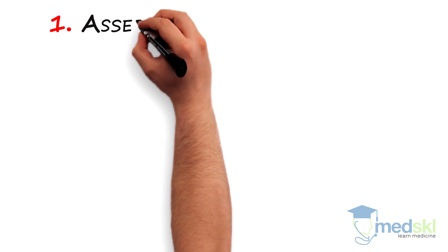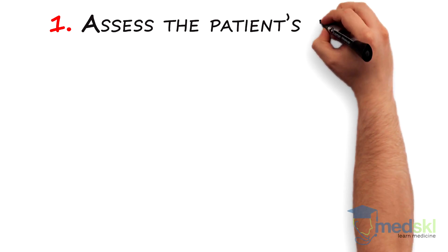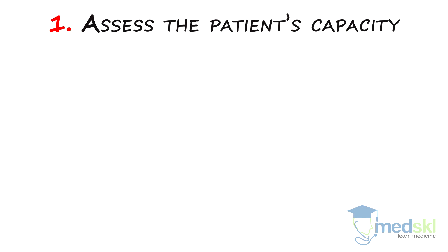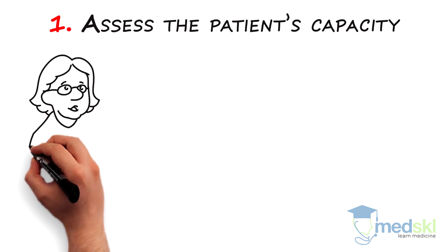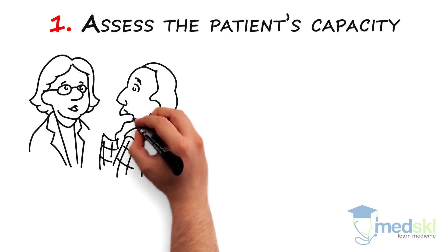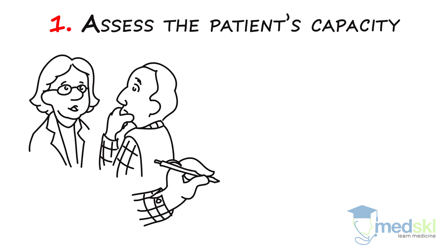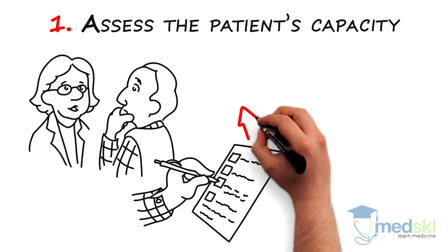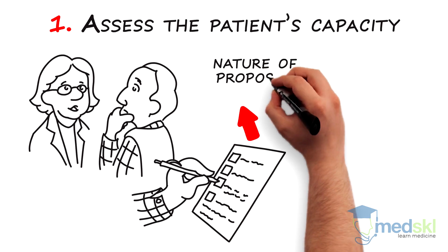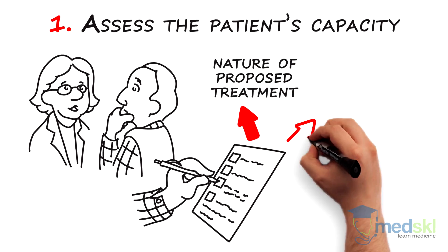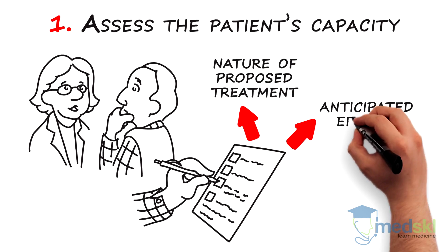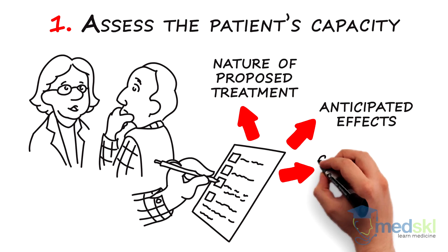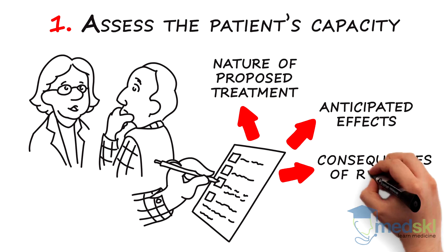1. Assess the patient's capacity. Before you even obtain consent, you need to be satisfied that the person can understand the nature of the proposed treatment, its anticipated effects, and the consequences of refusal.